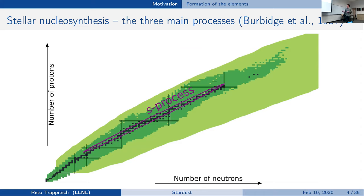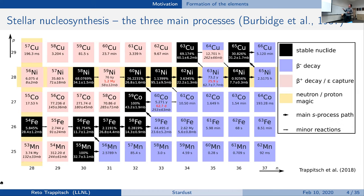One way to get over this hump is the slow neutron capture process, where you start with iron-56 and add neutrons: you form iron-57, which is stable, capture a neutron, form iron-58, which is stable, and so on until you hit a nucleus that is unstable, like iron-59. At that point you decay back to the valley of stability and have now made a new element with one more proton — cobalt-59. This way you can walk your way up to around lead and bismuth.